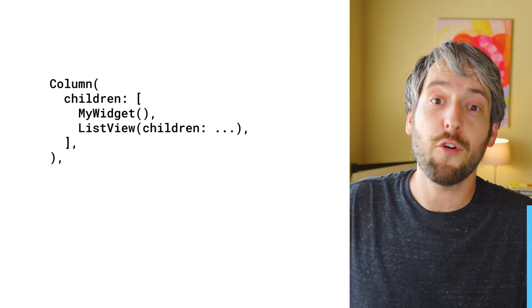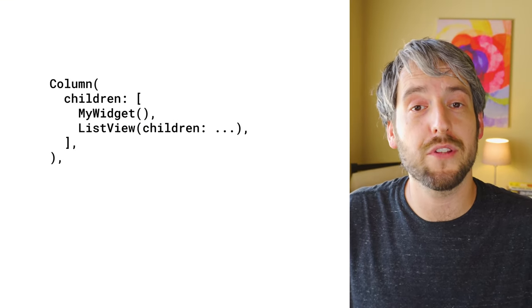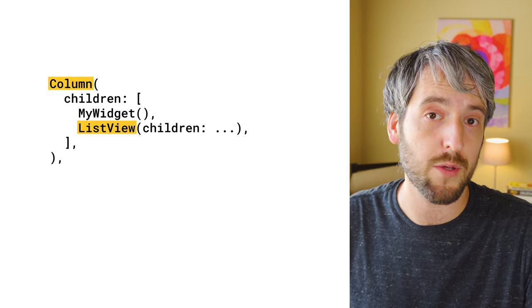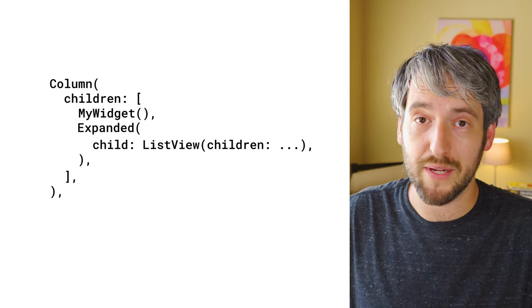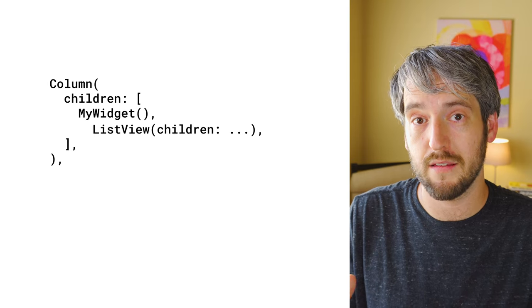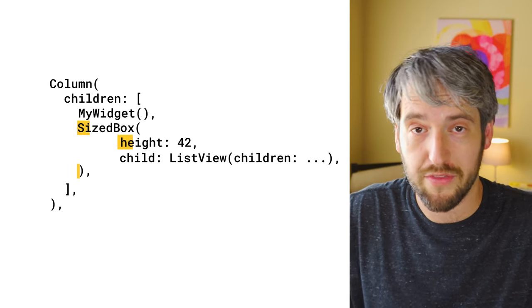What does this all mean for you? The good news is that if you have this problem, you know about it immediately — you get the unbounded height error from the Flutter framework. If you have this error, you should be as explicit as possible. For example, if you want the ListView to be as big as possible while still giving space to all the other children of the Column, just wrap it with Expanded or Flexible. On the other hand, if you want the ListView to be an exact size, wrap it with SizedBox.